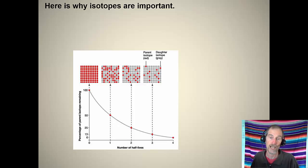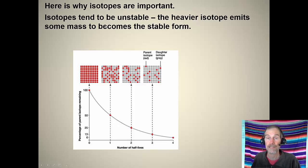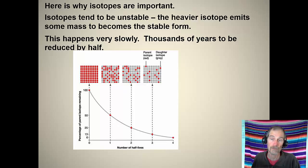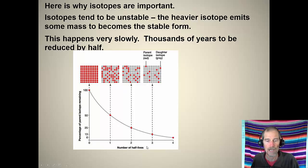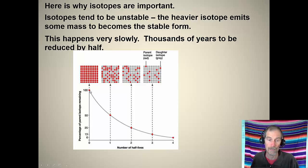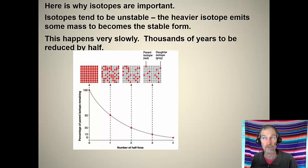Why are isotopes important? Isotopes tend to be unstable — the heavier isotope emits some mass to become the stable form, but it happens very slowly, maybe thousands of years to be reduced by half. Look at this graph: at time zero, if we have a heavier isotope, over a certain period of time half of it will remain — that's the half-life. Then half of the remainder is gone, and then half again. It's a probabilistic thing. So if you can measure how much of an isotope is in something, you can figure out how old it is.